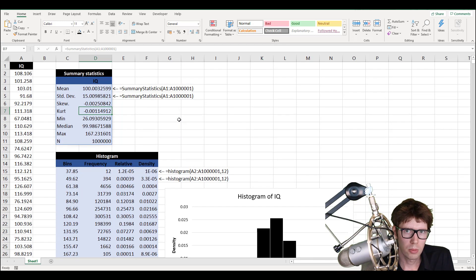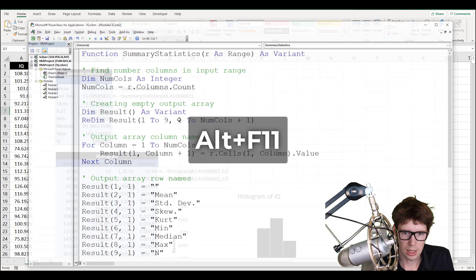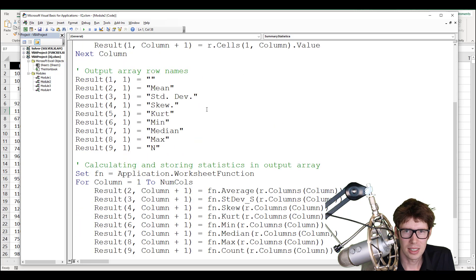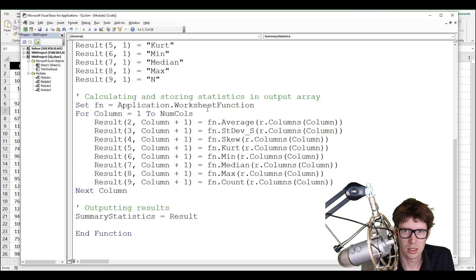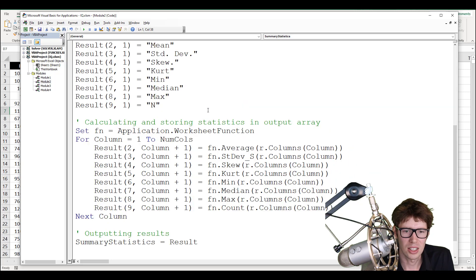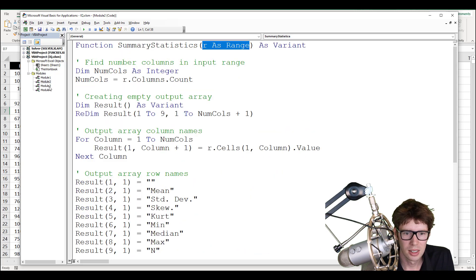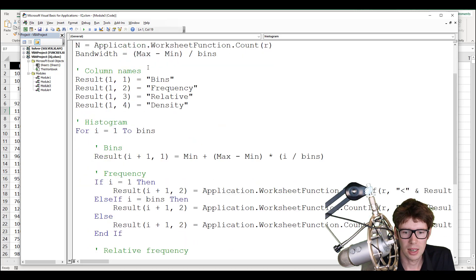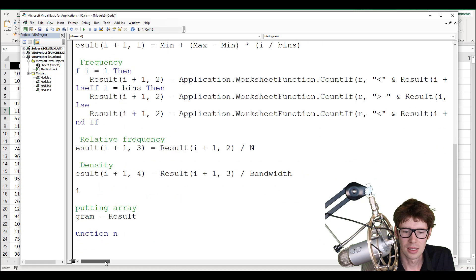So in order to open up VBA, you can use a shortcut ALT and F11. And here is the code for the summary statistics table. It's a function. We gave it the name summary statistics. It has an input range, just named R, and the output is an array. I'm not going to go too much through the details here of this. This is not the focus of the video. You can look at the other videos if you want to learn more about the summary statistics table function, and similarly for the histogram table. So a function named histogram, and it is calculating the histogram.